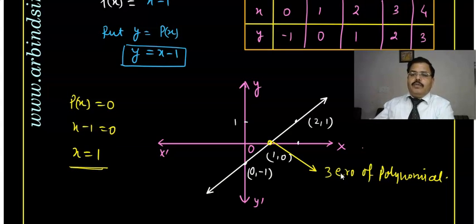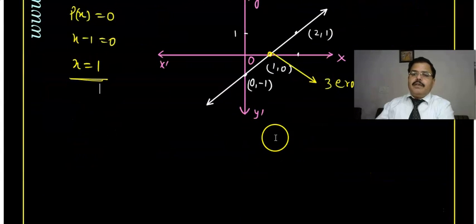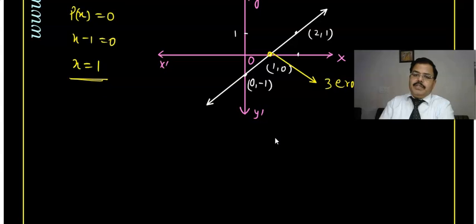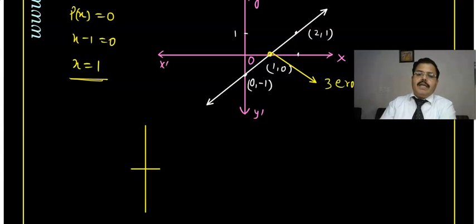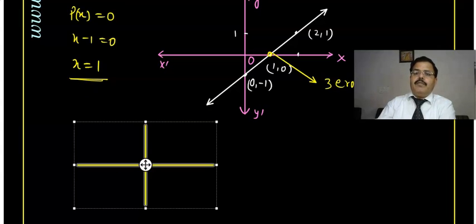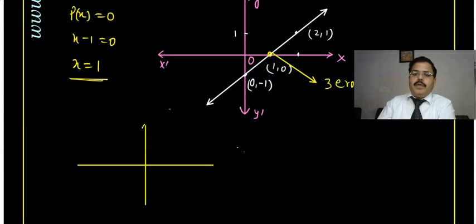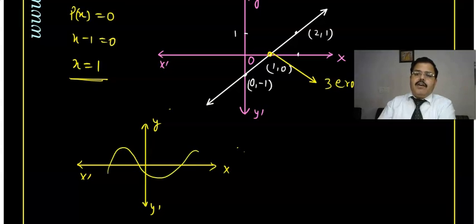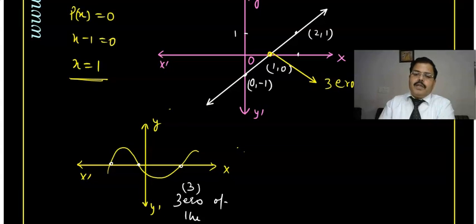So, if a polynomial gives a straight line which intersects the x-axis at one and only one point, there will be one zero. Suppose there is a curve — for example a quadratic polynomial — and the graph of this polynomial intersects the x-axis at three points: point 1, 2, and 3. In that case there will be three zeros of the polynomial.